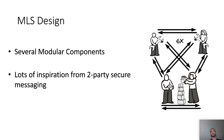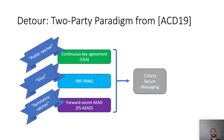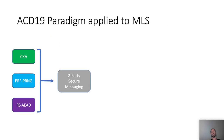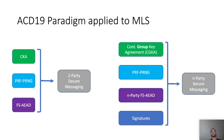The MLS design considers several modular components and there is lots of inspiration from the two-party setting. This is similar to the ACD 19 paradigm. In ACD 19, the authors showed how to modularize the double ratchet using three primitives: continuous key agreement (the public ratchet), forward-secret authenticated encryption (the symmetric ratchet), and the glue between them, which is the PRF-PRNG. ACD 19 shows how to compose those three primitives and build two-party secure messaging.